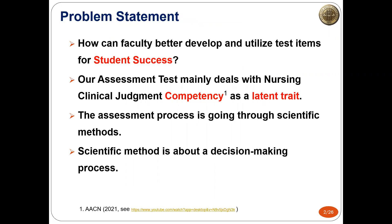I'd like to talk about how faculty can better develop and utilize test items for students. The problem is we cannot directly observe a student's competency or ability trait. Since ability is not directly observed, we are supposed to develop a test tool to estimate students' ability. In testing theory, an unobservable competency scale is regarded as a latent trait because it is not directly observed. Therefore, to estimate the latent competency of students, we have to operationalize variables with test items.